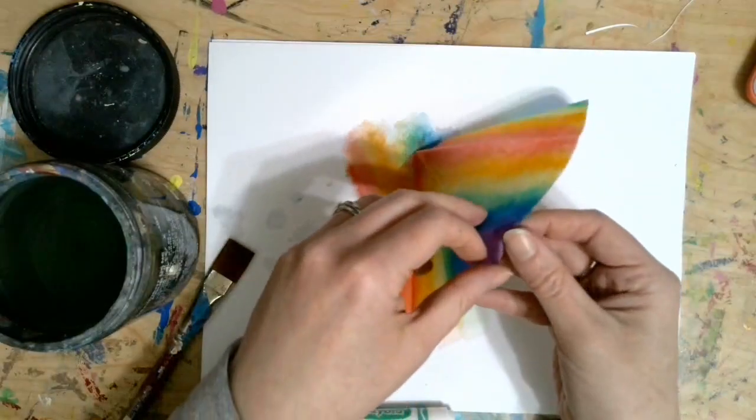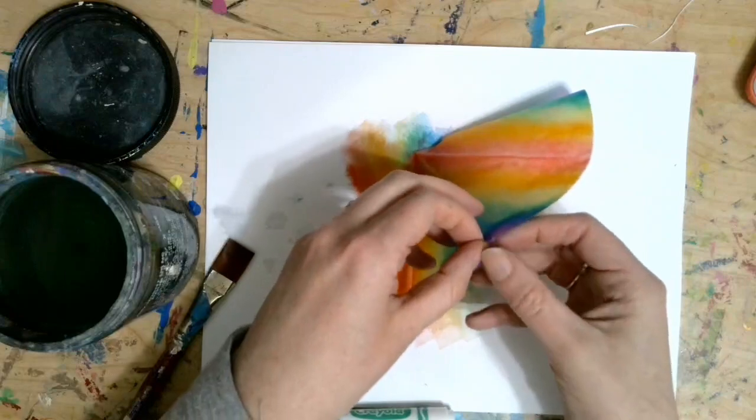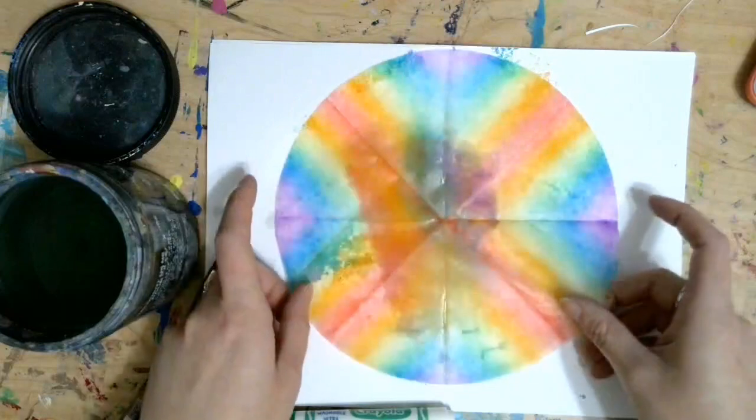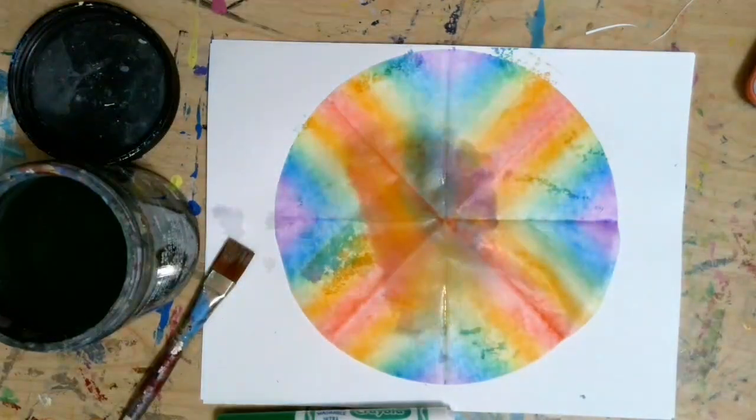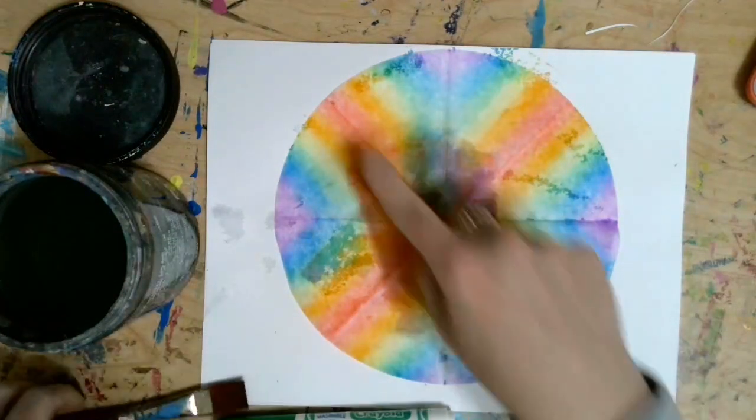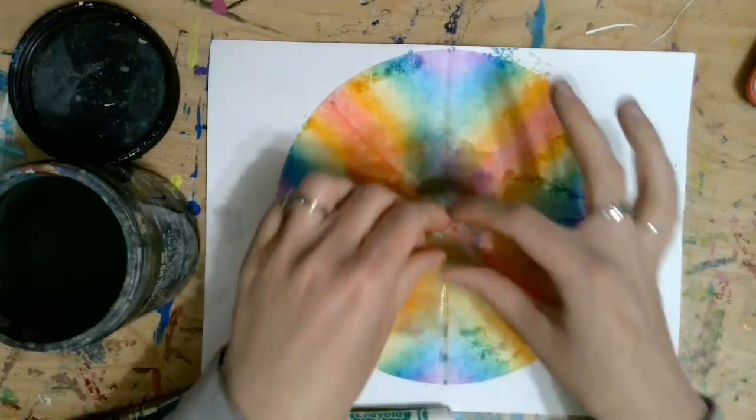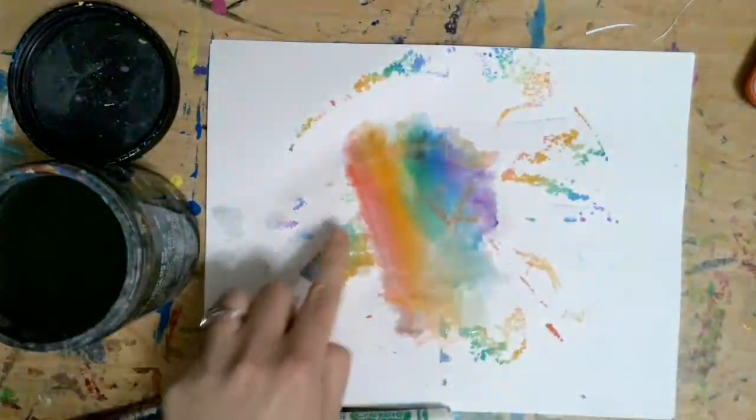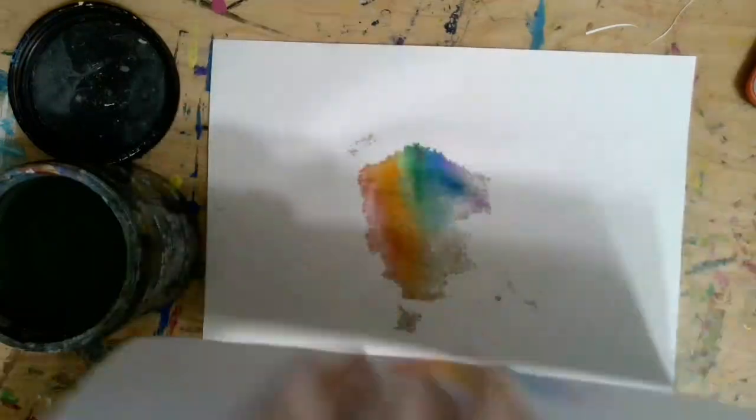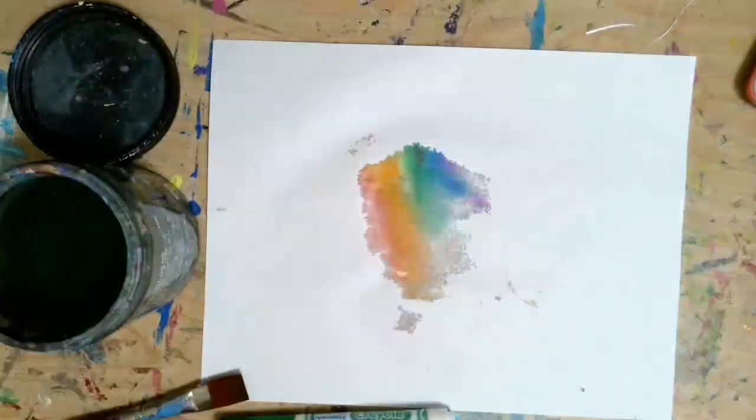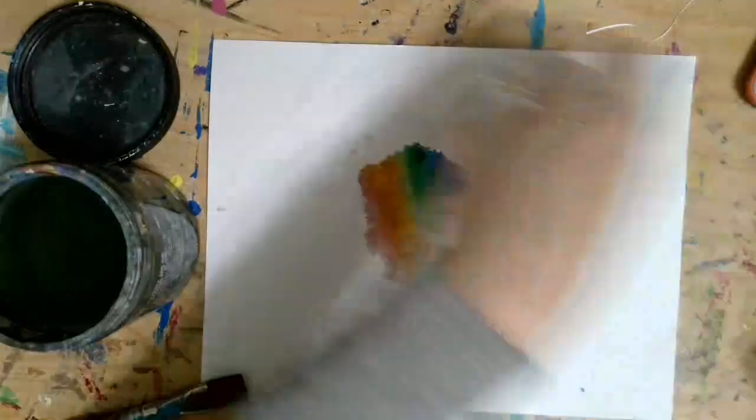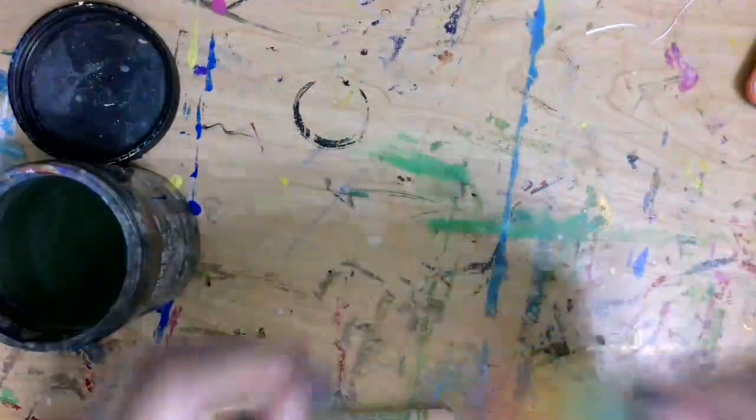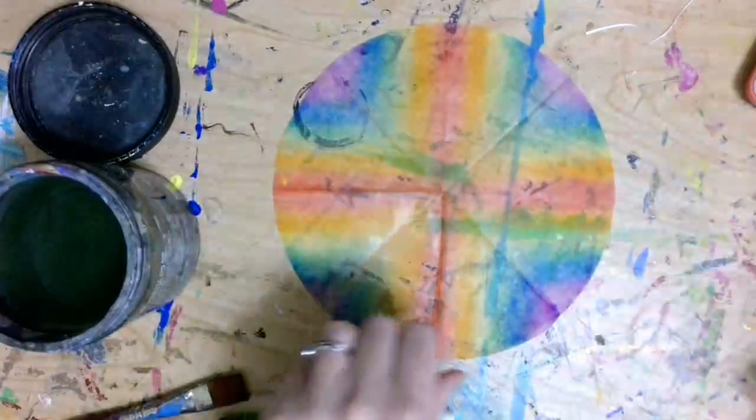But when you unfold it, that design that was on the top of our little triangle slice should soak through to all sides of our coffee filter to create a radial symmetry design. Now pull this off so you can see kind of the mess that it made. Let's put it on a fresh sheet of paper so we can look at it. Pretty cool, right?